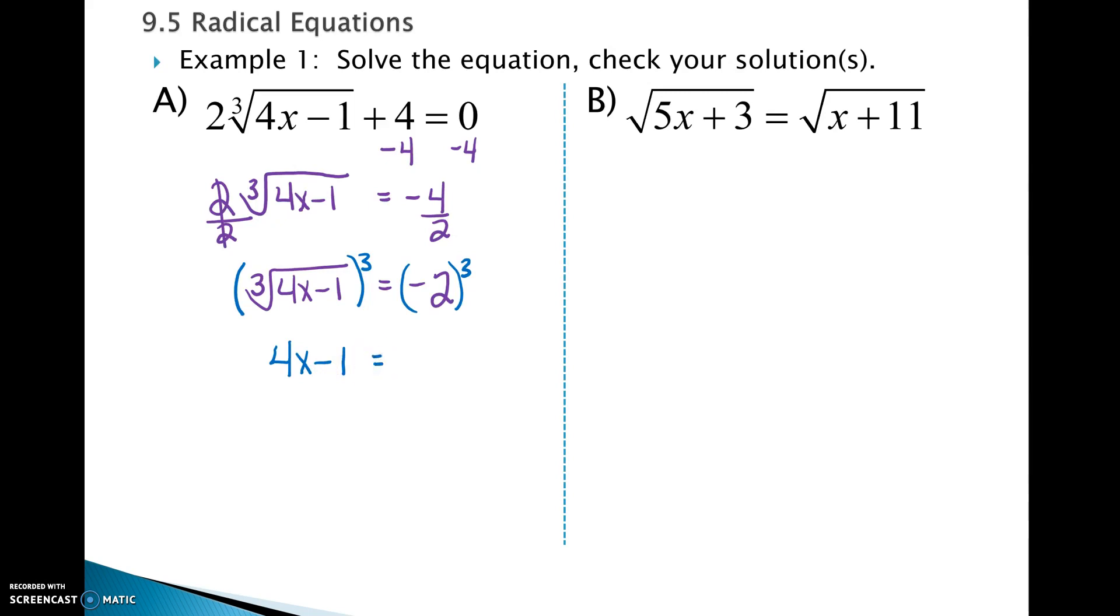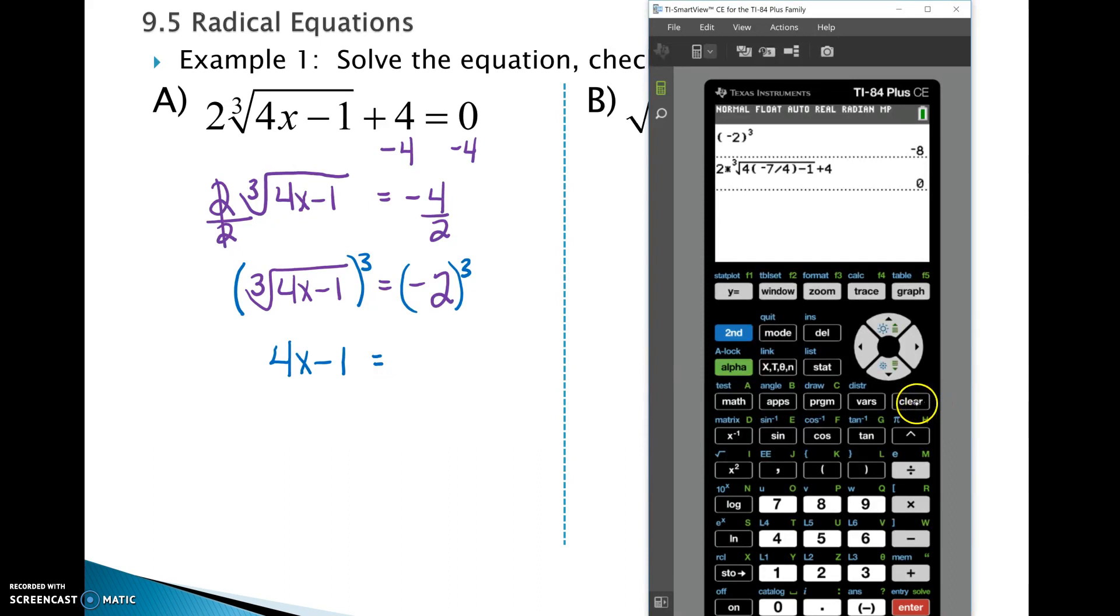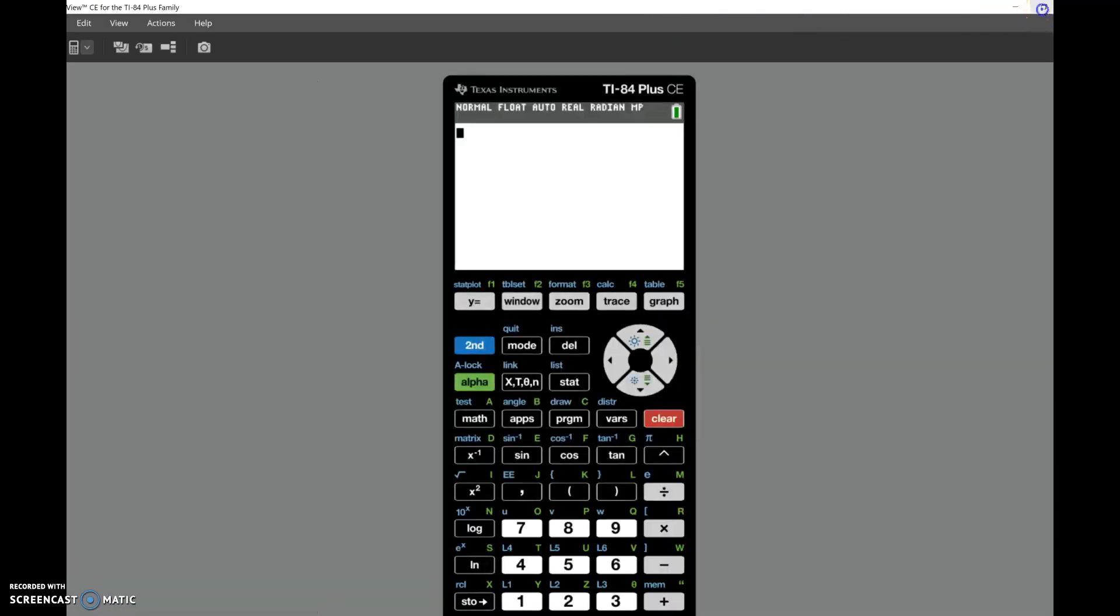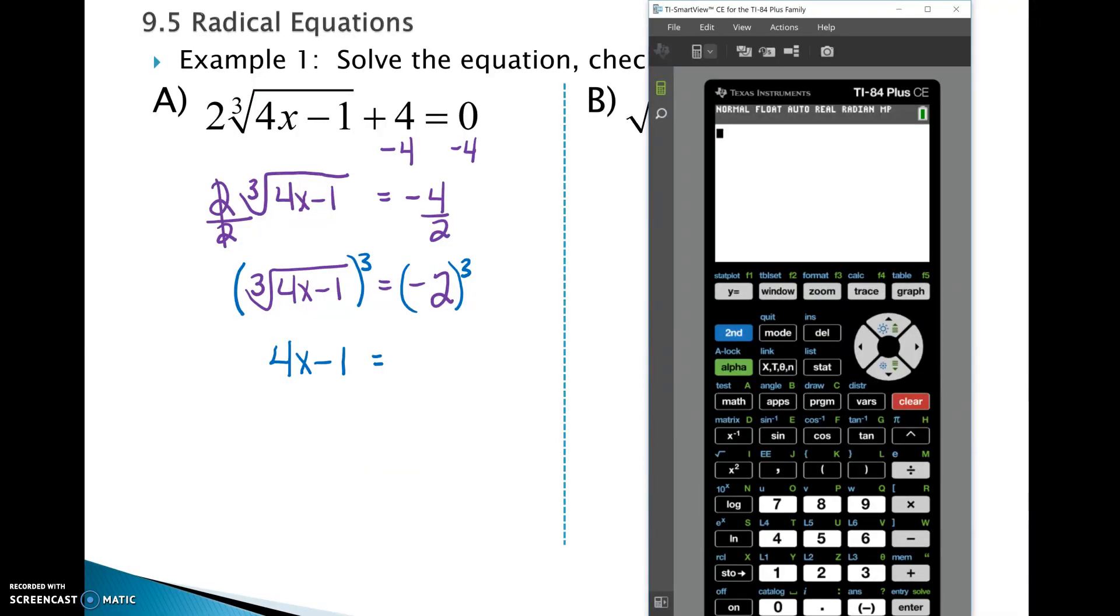On the right side, if you don't know what negative 2 to the third is, you would need to type it into your calculator. Parentheses are your friend. So parentheses, negative 2, close your parentheses, raised to the third. It is negative 8.